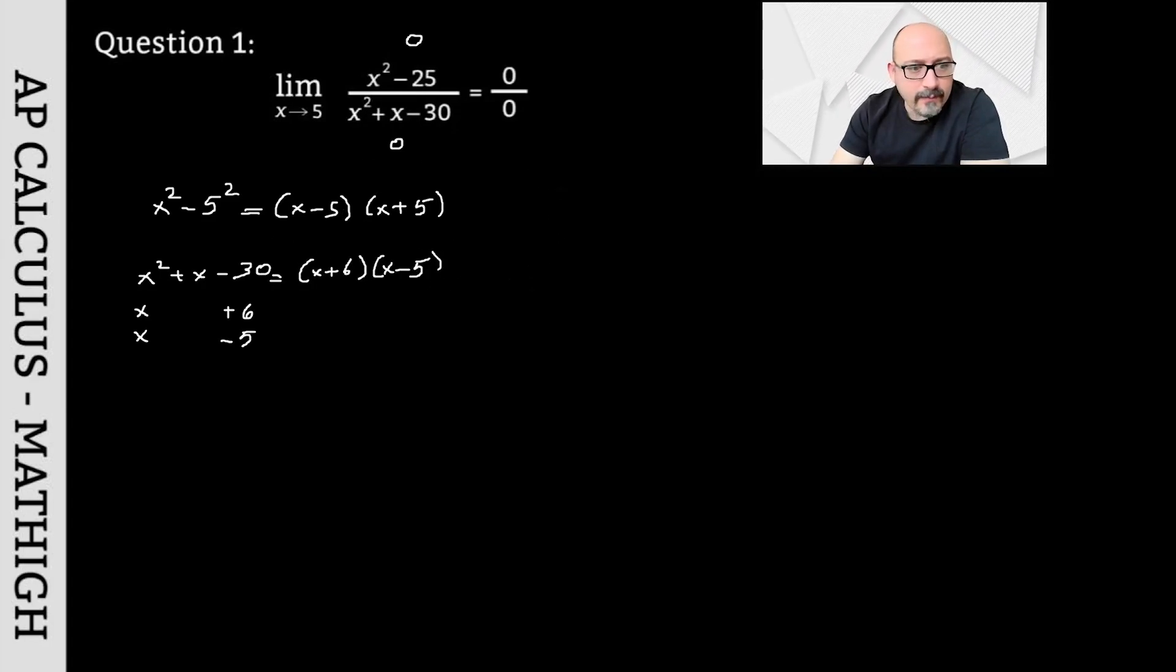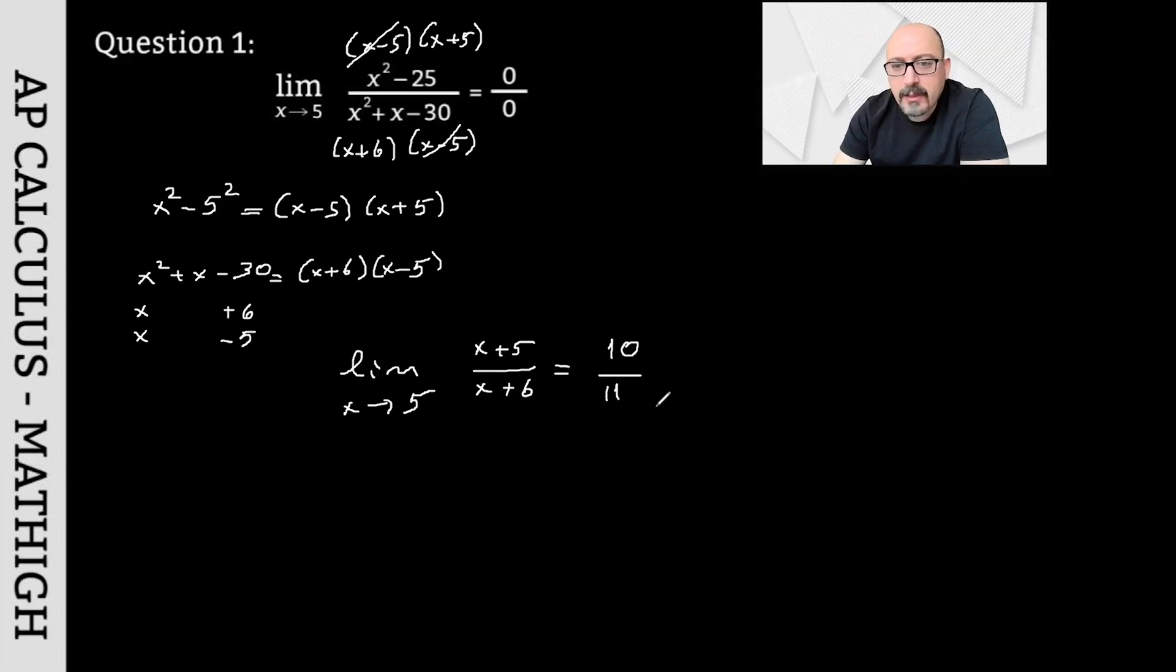If we substitute these in, the top part is (x-5) times (x+5). On the bottom part, we got (x+6) times (x-5). I simplified the (x-5) terms. Limit as x approaches 5, I found it to be (x+5) over (x+6). Now I'm substituting 5 for x. The top is 10 and the bottom is 11, so we get 10 over 11.